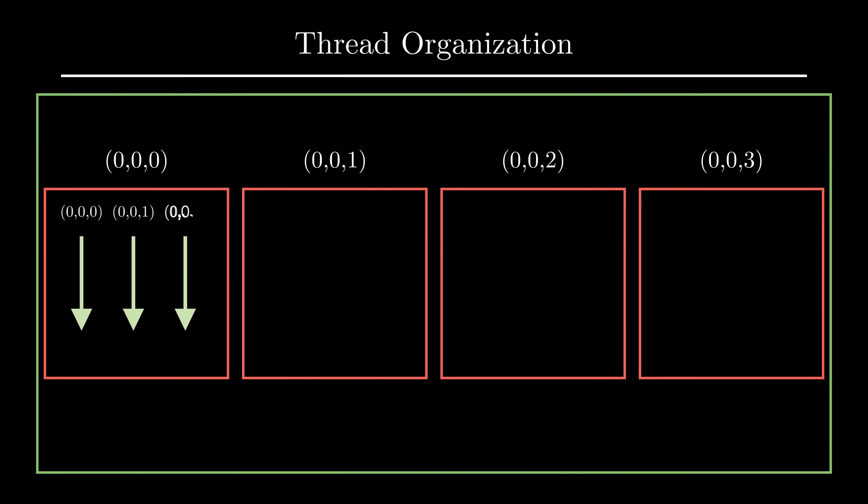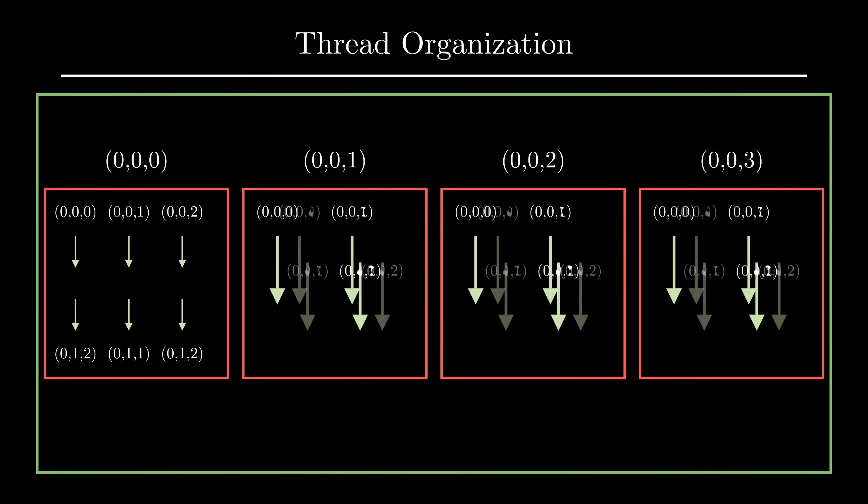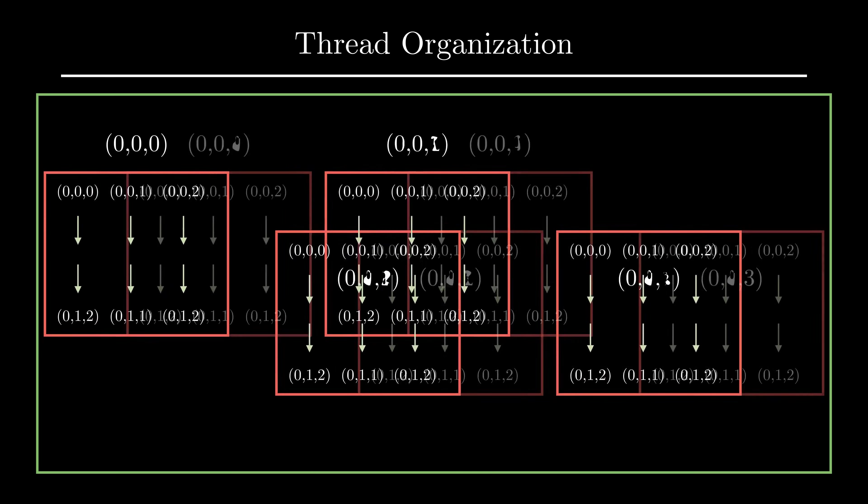The only condition is that the thread organization inside each block is same and the maximum number of threads in a block is 1024. Threads in a block can also be arranged in higher dimensions. The same thing goes for the grid.